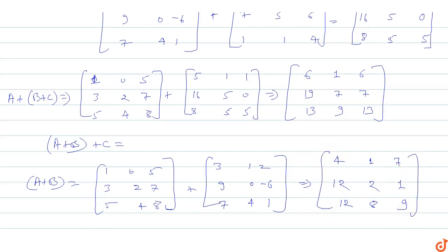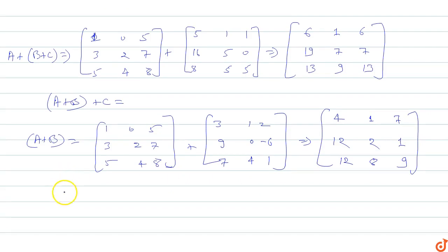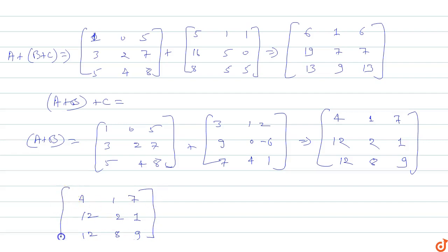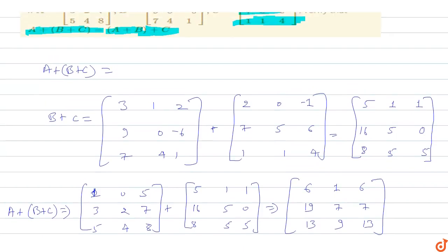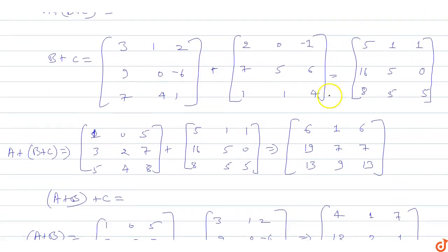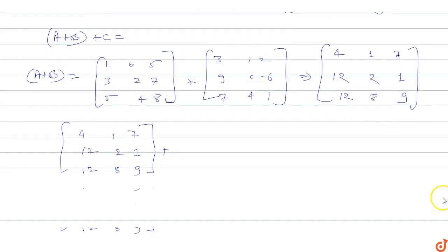Now we compute (A + B) + C. The A + B matrix is 4 1 7 / 12 2 1 / 12 8 9, and matrix C is 2 0 -1 / 7 5 6 / 1 1 4.